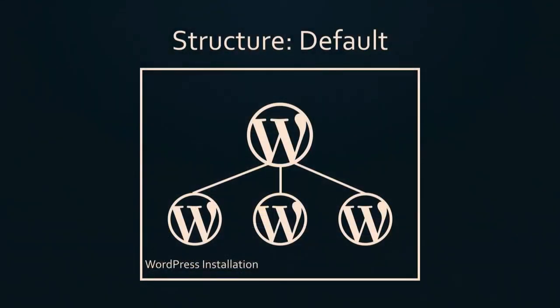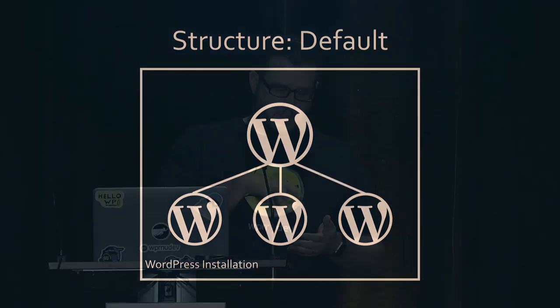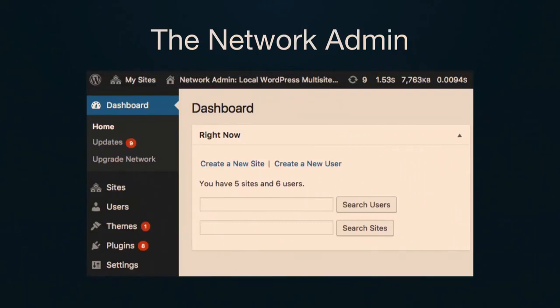When you first create a site, you create what's called a network. This is the default structure: you have your main site at the top, and then all the sub-sites underneath it — the whole thing together is called a network. That network has its own settings that reference the entire network of sub-sites. There's actually a hidden feature in multisite that you can enable with plugins called multi-network, which allows you to have multiple main domains with their own sub-sites underneath, all in the same WordPress install.